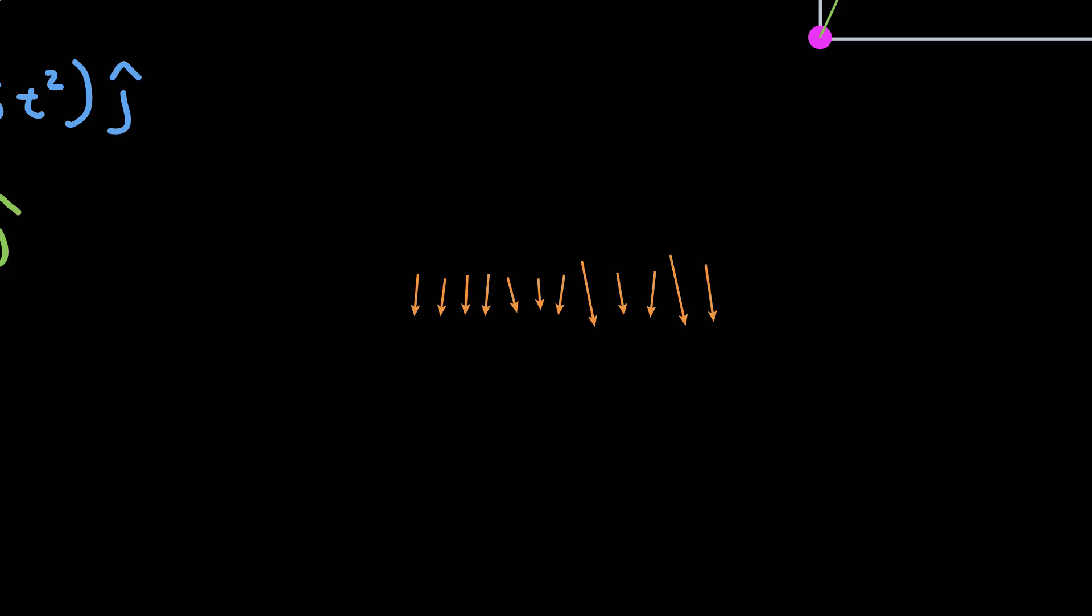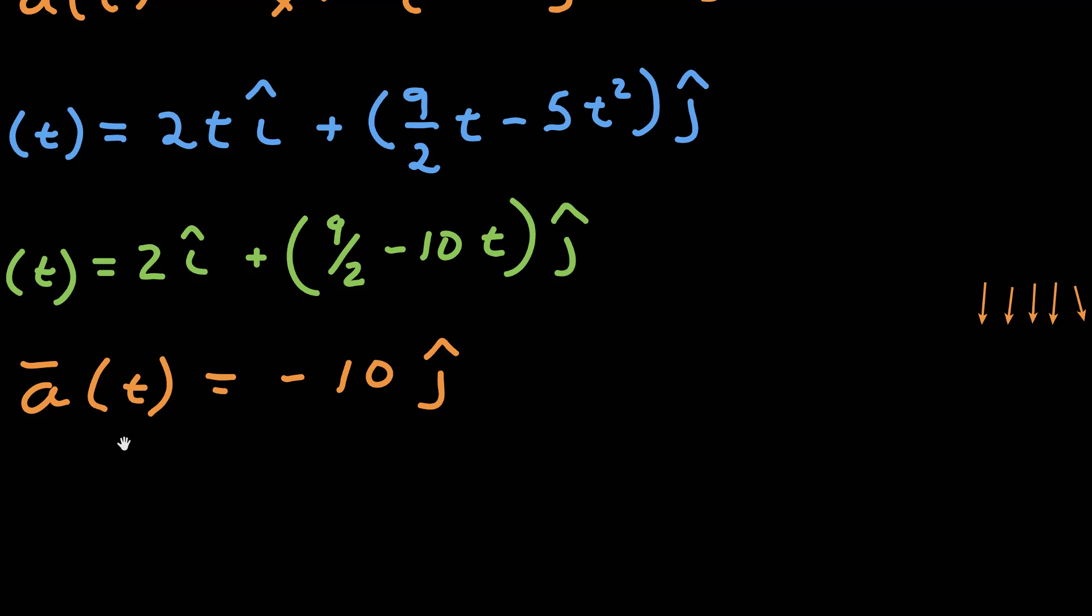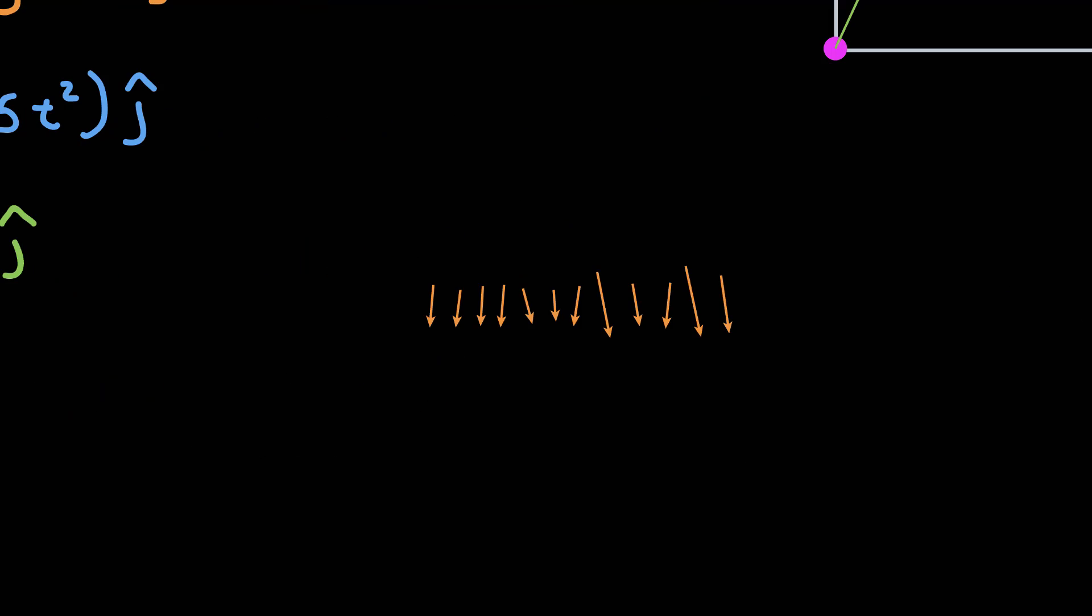every acceleration vector is pointing downward, and they're all about the same size, which is exactly what we expected given our calculation. A constant acceleration pointing downward. Despite there being a somewhat complicated trajectory, the ball was moving forward the whole time. The acceleration was constant and downward, dominated just by the acceleration due to gravity.